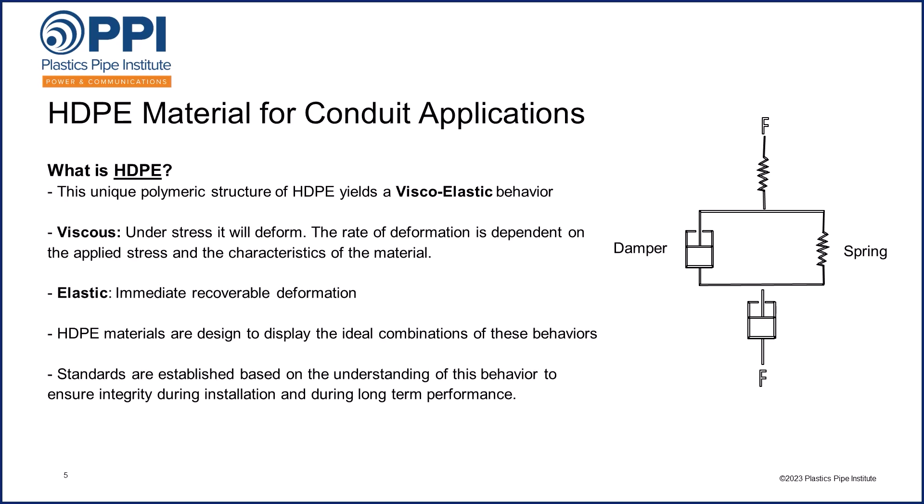Viscous behavior means that it will deform under stress and not recover — think of a very thick liquid like honey or butter. The rate of deformation depends on the level of applied stress and the characteristics of the material. Whereas elastic behavior provides immediate recoverable deformation when the stress is removed, like a spring. The illustration on the right shows a spring and a damper, as if this were a car suspension, giving a mechanistic illustration of how polyethylene can react to forces, stresses, and movement. HDPE materials are designed to display the ideal combinations of behaviors depending on the application. Every material has its limits, including HDPE, and these limits are reflected in product and application standards to ensure integrity of the pipe during installation and long-term performance in service.